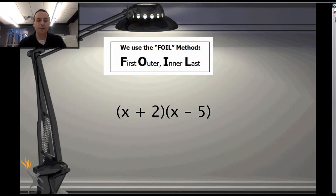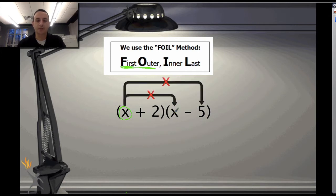When we talk about FOIL, the first thing is identifying our numbers. Here's our first number on the outer side, so we distribute that one first. We say: x times x, and x times negative 5. That gives us x squared and negative 5x.